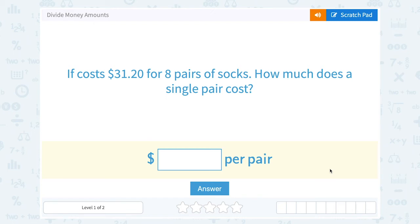Let's take a look at how to divide money amounts. It costs $31.20 for eight pairs of socks. How much does a single pair cost?